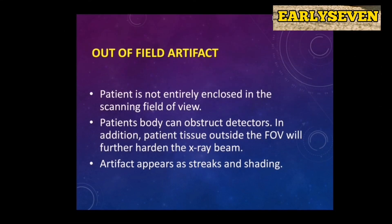Another artifact is the out-of-field artifact. This happens when the patient is not entirely enclosed in the scanning field of view, or FOV. The patient's body can obstruct the detectors. In addition, patient tissue outside the FOV will further harden the X-ray beam. The artifact appears as streak or shading.